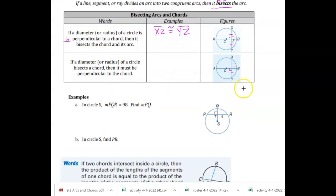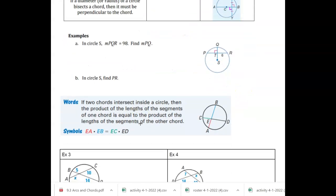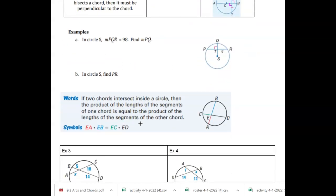All right, so let's look at some examples how we might use this. So in circle S, they tell you that the measure of PQR is 98. So I'm going to draw that. So find the measure of P to Q.